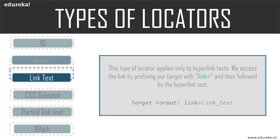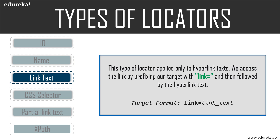Now let's understand link text. Finding an element with link text is very simple, but make sure there is only one unique link on the web page. If there are multiple links with the same link text — such as repeated header, footer, or menu links — Selenium will perform the action on the first matching element. This type of locator applies only to hyperlink text; we access the link by prefixing our target with 'link' followed by the hyperlink text.